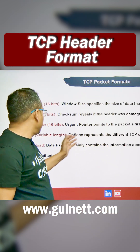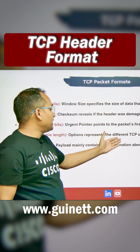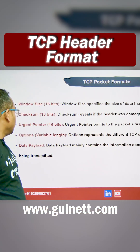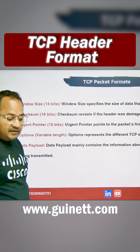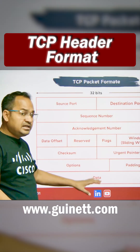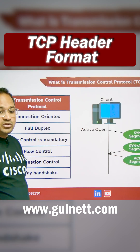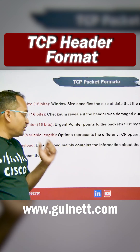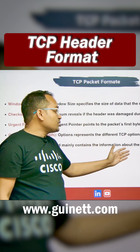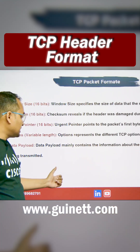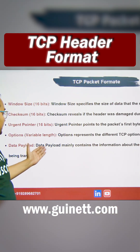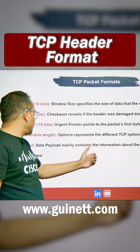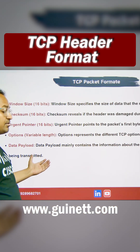The optional field is variable length, dependent on different TCP options, so we can use it as per our need. The data payload is the final thing required here — it contains the actual application data being transmitted from source to destination.